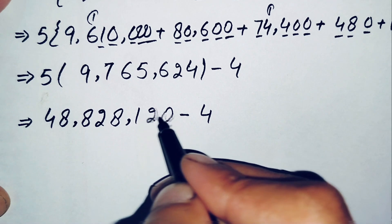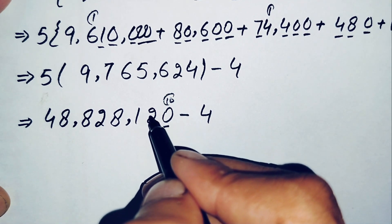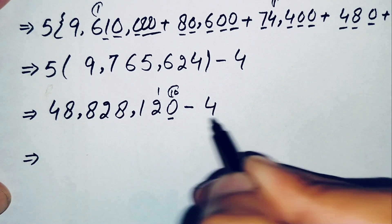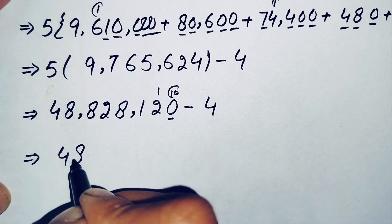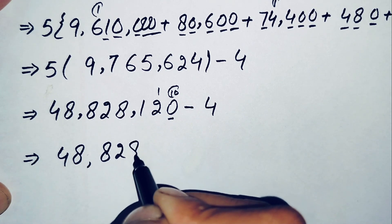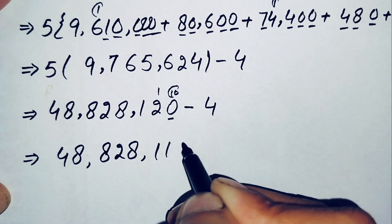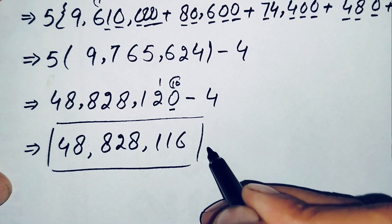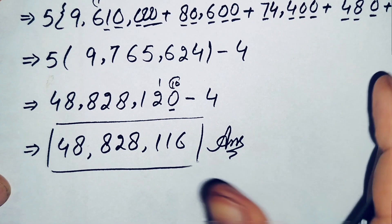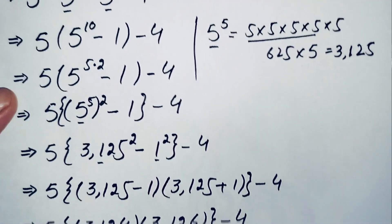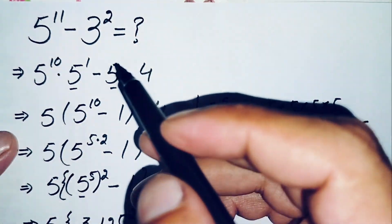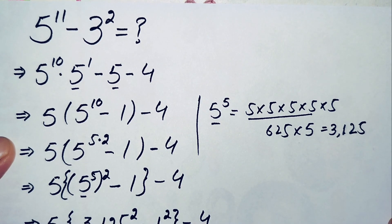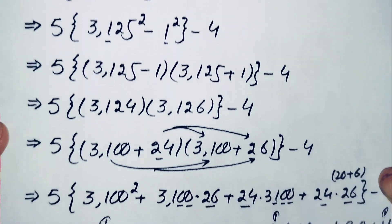Now we subtract 4 from the ones digit. The ones digit is 0, so we borrow from the tens: 10 minus 4 is 6, and the remaining digits stay the same. So the final answer is 48,828,116. This is the value of this nice and interesting simplification math problem. If you like this video, don't forget to subscribe to my YouTube channel. Thanks for watching.